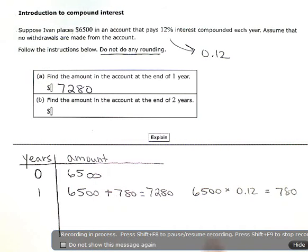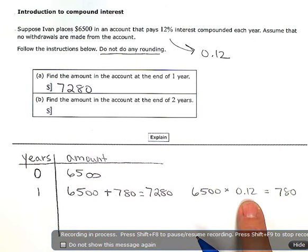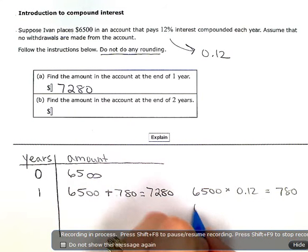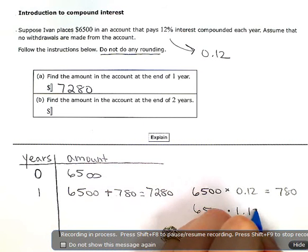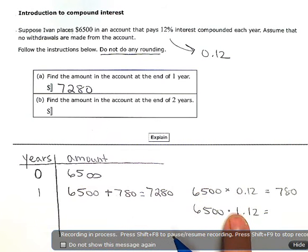Now, it took me two steps of calculations here. I had to figure out what the interest was, and then I had to add it on. I can do that all in one step by, instead of multiplying by 0.12, if I multiply by 1.12. Because what this means is we're keeping 100% of what we already had in there. This is 112% as a decimal. Keeping 100% of what was in there, plus we're increasing it by 0.12.